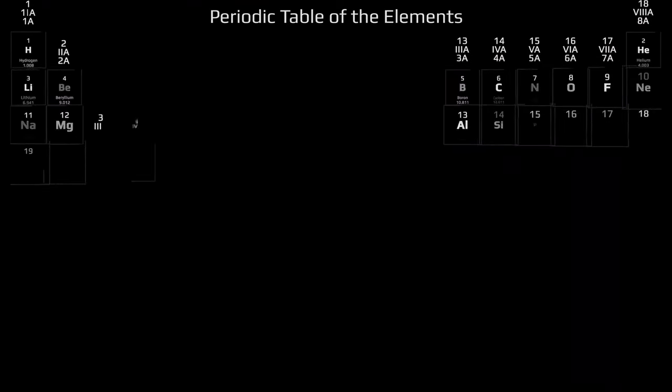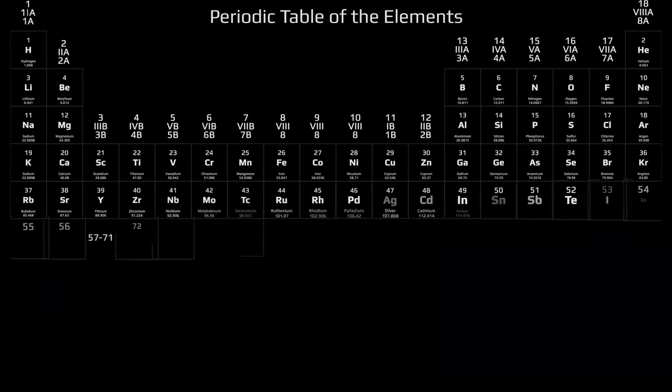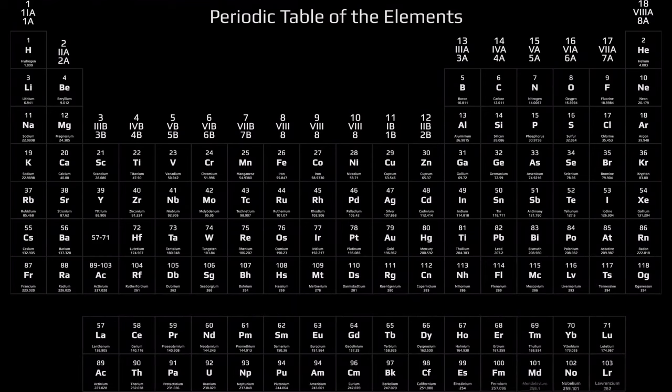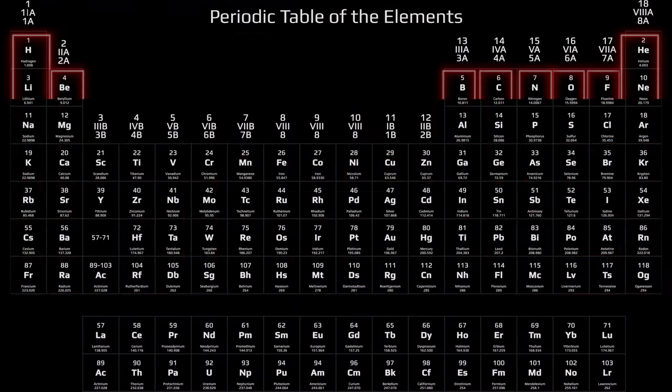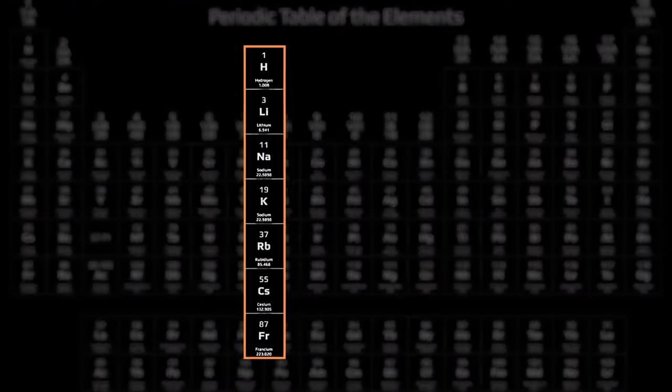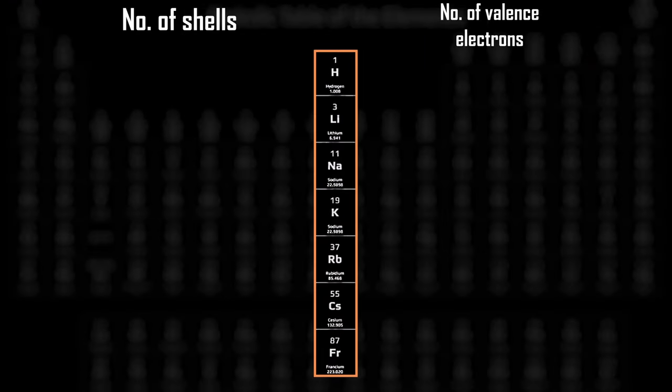For those who don't know, the periodic table is an orderly arrangement of all elements discovered to this point in ascending order of atomic number, broken up into rows and columns. As you move down a given column, the number of valence electrons remains the same.